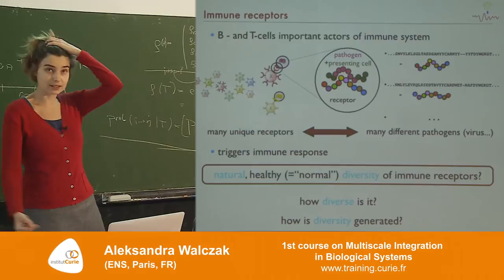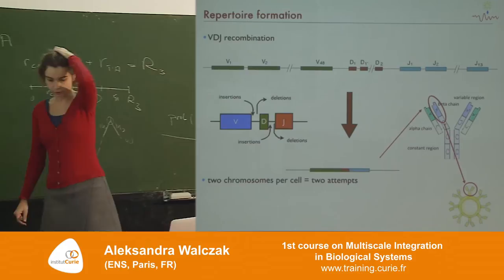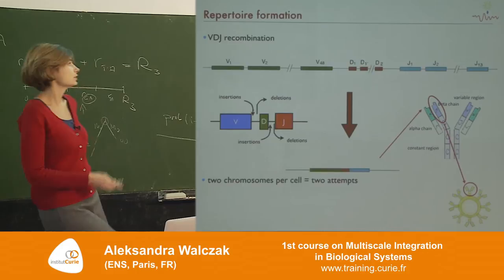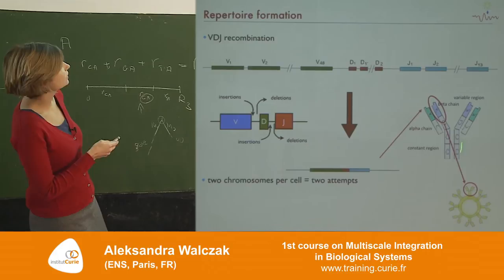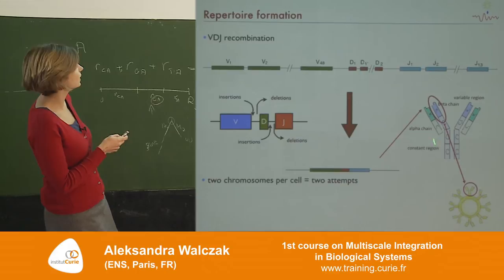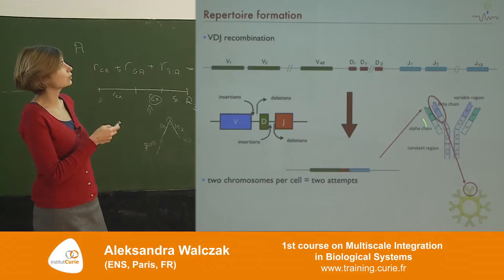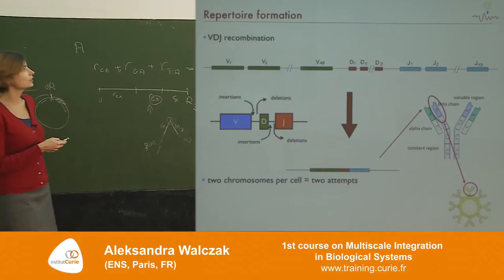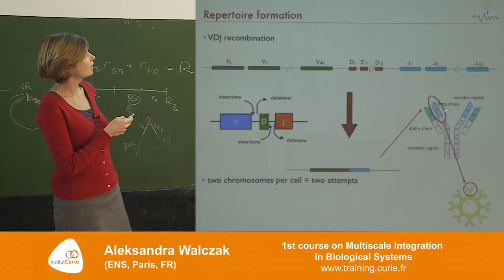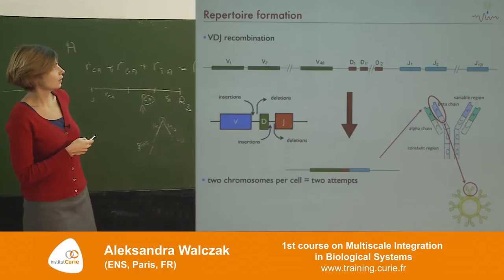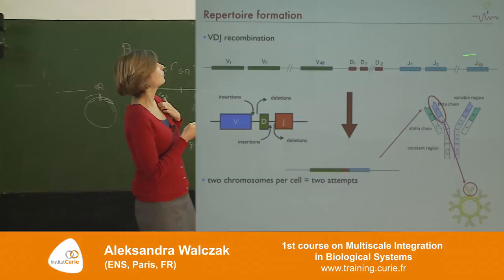How is this diversity generated? I need to tell you a little bit more about these receptors. You have a cell with a receptor on its surface. This is a cartoon for T cells, but except for the names, the idea is the same for B cells. These receptors have some scaffold that sticks into the cell, and then they have an alpha chain and a beta chain in the case of T cells, or light and heavy chain in the case of B cells. On the end, above some constant scaffold region, there's the variable part of the receptor, which is what actually interacts with the pathogen.